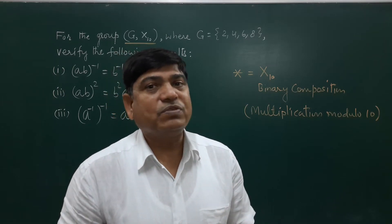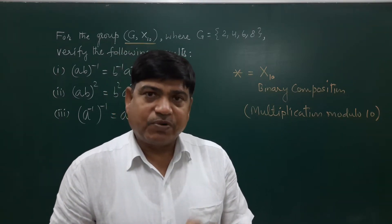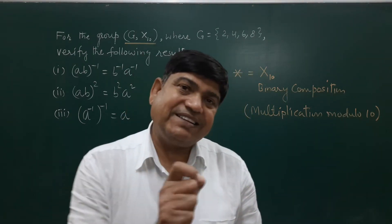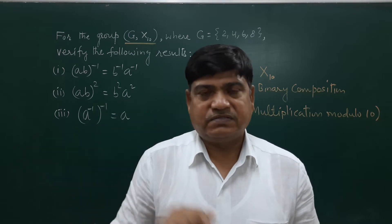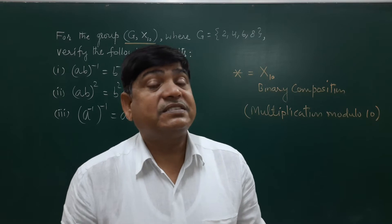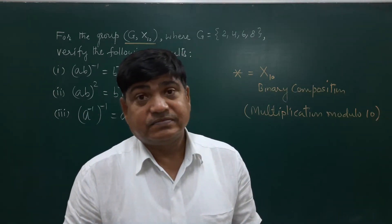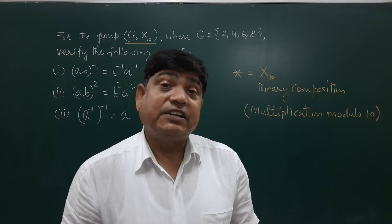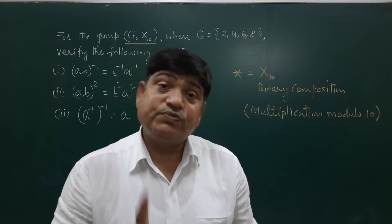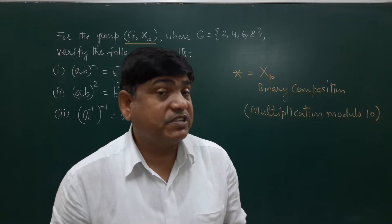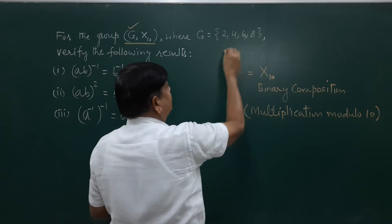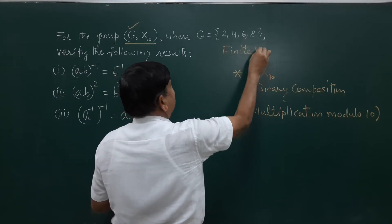Just multiply two numbers. If the product is less than 10, then you write the answer as such — for example, 2 into 4 is 8. But if the answer is 10 or greater than 10, then divide it by 10 and write the remainder. This is a finite set: {1, 2, 3, 4}.